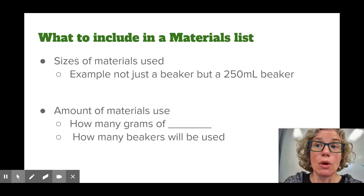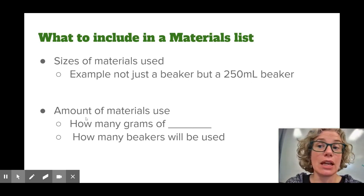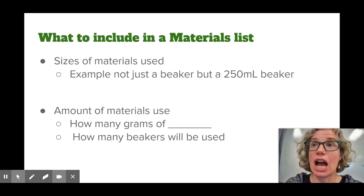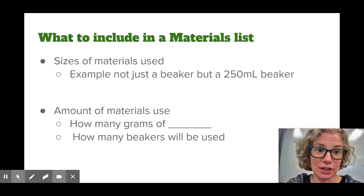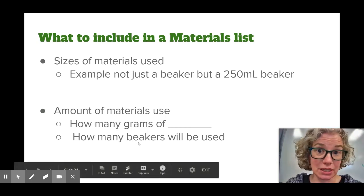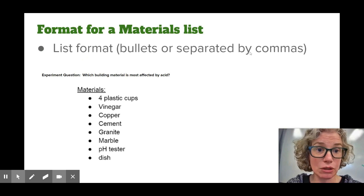So what do we include? Always make sure you include the size. So instead of a beaker, say a 250 milliliter beaker, and include the amount of each material. How many grams of baking soda do you need? How many milliliters of vinegar do you need? How many beakers are you going to need? Often a list format, either with bullets or separated by commas, is a great way to write a procedure.